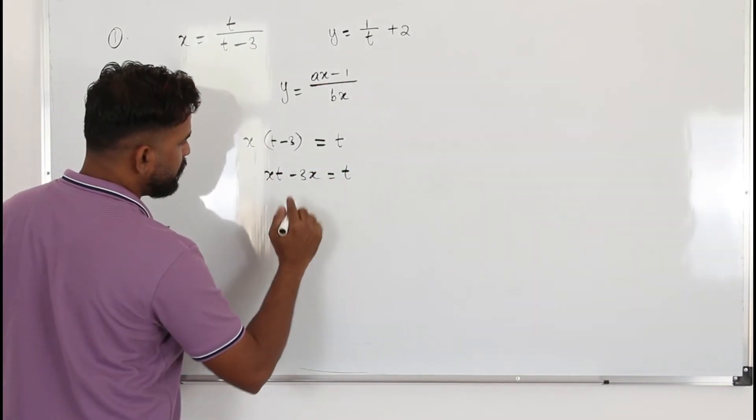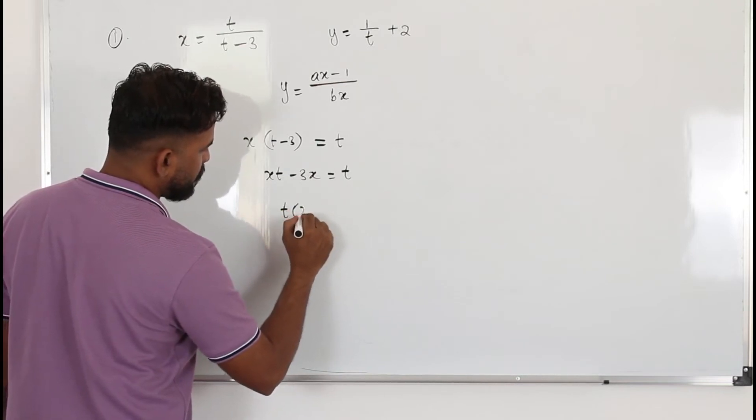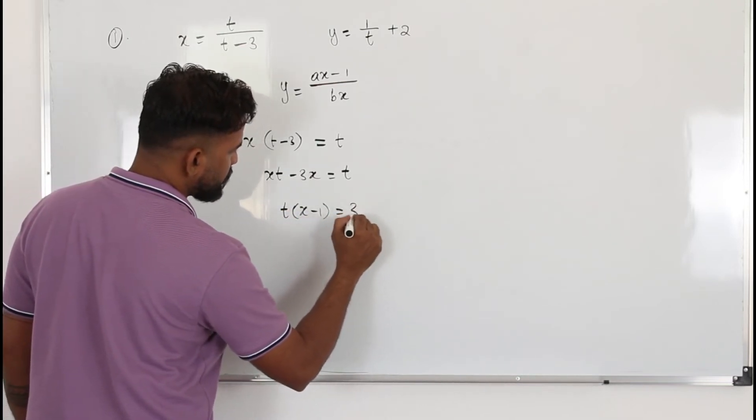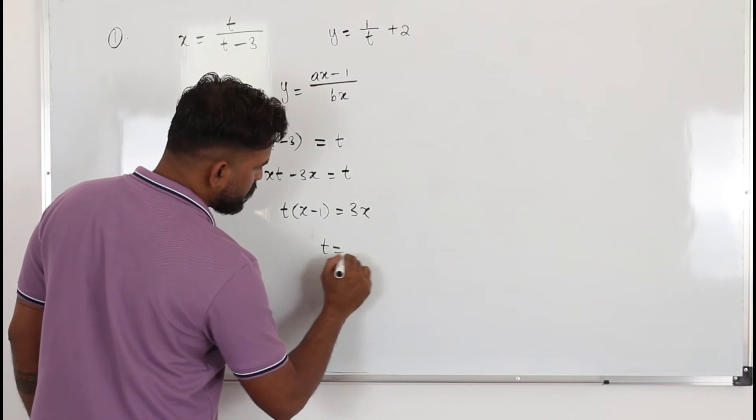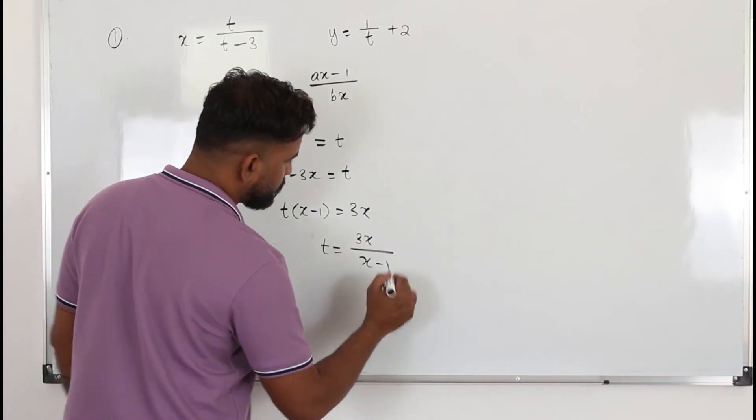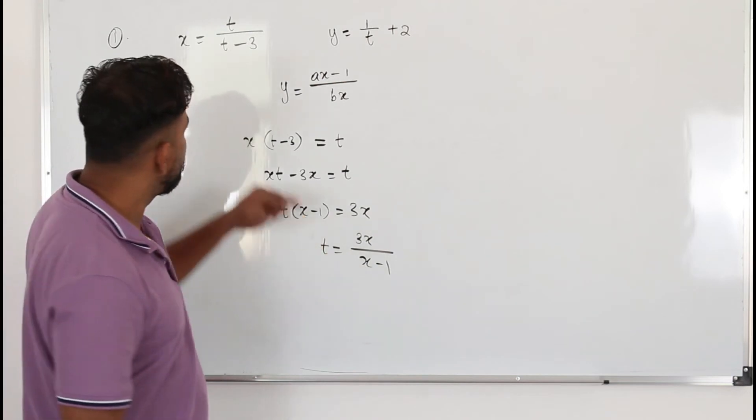Bring this t here, xt minus t. If you take t as a common factor, x minus 1 is 3x. So t is going to be 3x divided by x minus 1. So that's what the first step is.